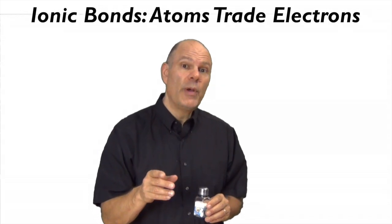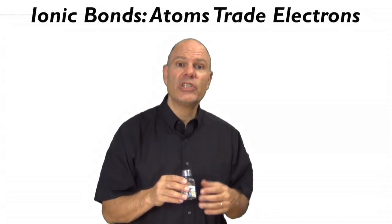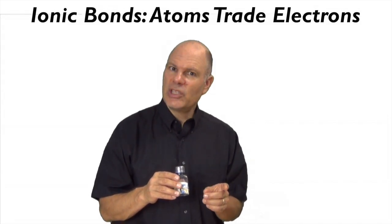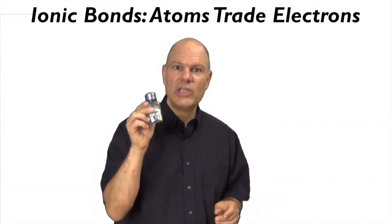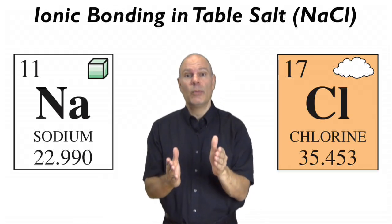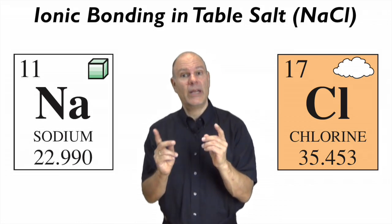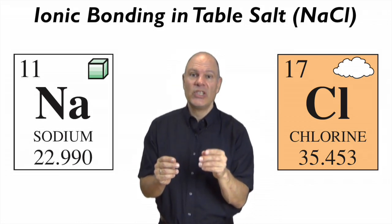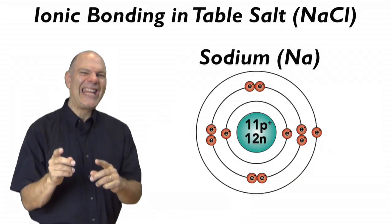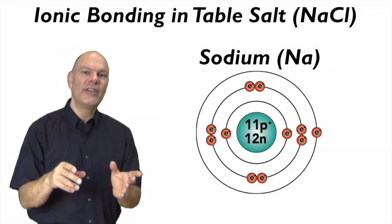We'll start by looking at a situation where atoms trade electrons with one another, and that results in a kind of bond called an ionic bond. To study that, we're going to first look at the formation of table salt. Table salt's chemical name is sodium chloride, its symbol is NaCl. Na is the symbol for the metal sodium, Cl is the symbol for the gas chlorine. Sodium has 11 protons, 12 neutrons, and 11 electrons.